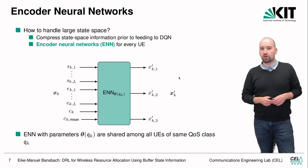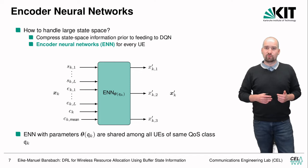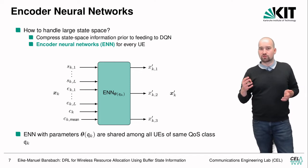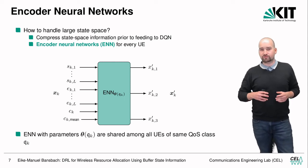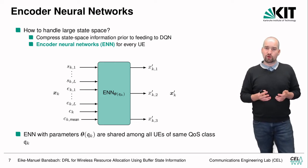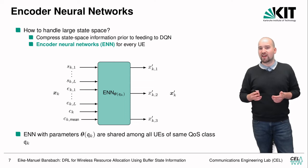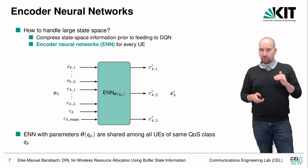We introduce encoder neural networks (ENNs). For each user equipment, we have the size and age of every packet plus the channel quality indicator, and we compress this multidimensional vector to a three-valued vector. User equipments belonging to the same QoS class share ENN parameters. With four QoS classes, we train four ENNs, and each user equipment uses the ENN corresponding to its class, sharing parameters but receiving its own compressed representation.